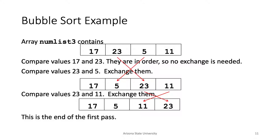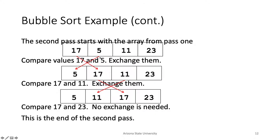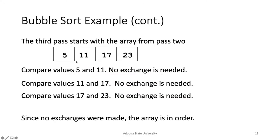So we go through another pass. Looking at the first two elements — 17 and 5 are in the wrong order, so we swap. Then 17 and 11 — swap. Then 17 and 23 — they're in the right order, no swap. We made a swap, so we do another pass. 5 and 11 — no swap. 11 and 17 — no swap. 17 and 23 — no swap. Did we make a swap along the way? No. So the list is sorted.